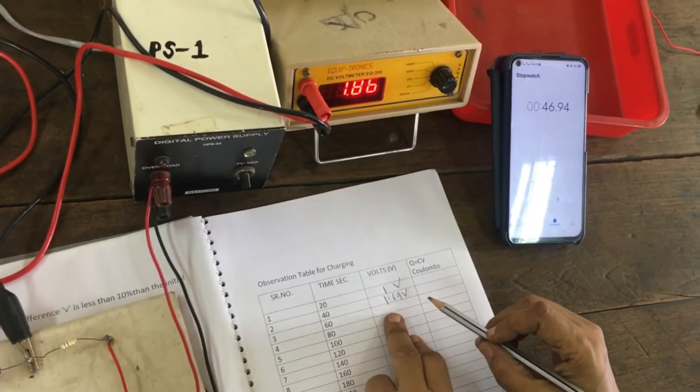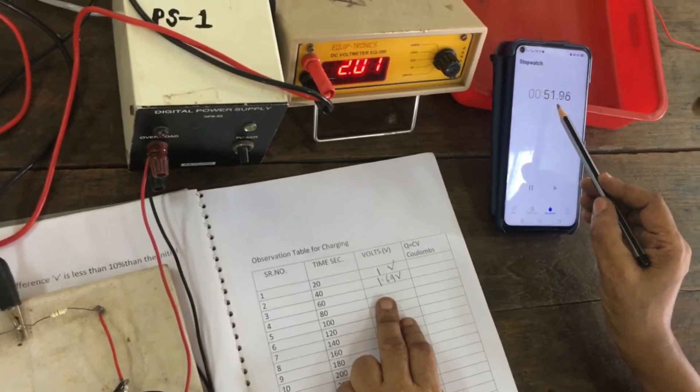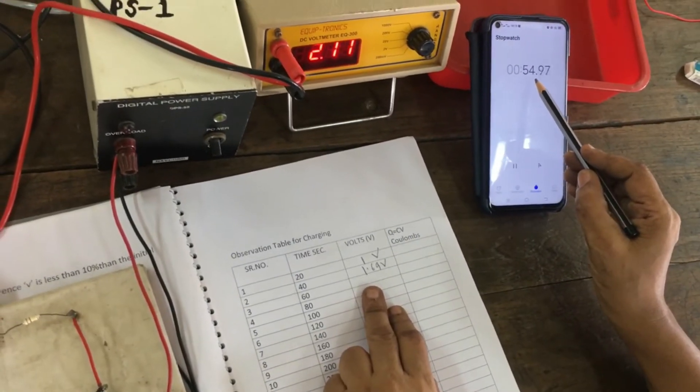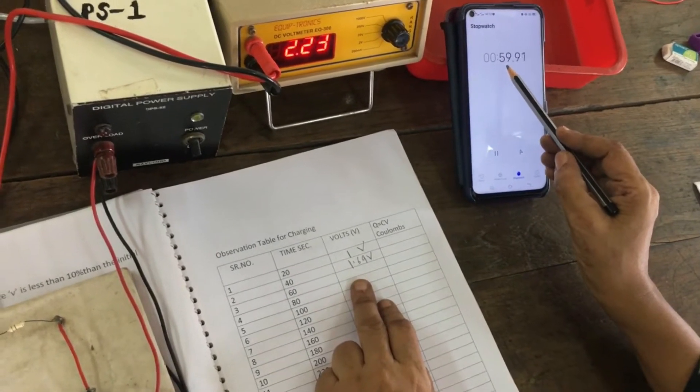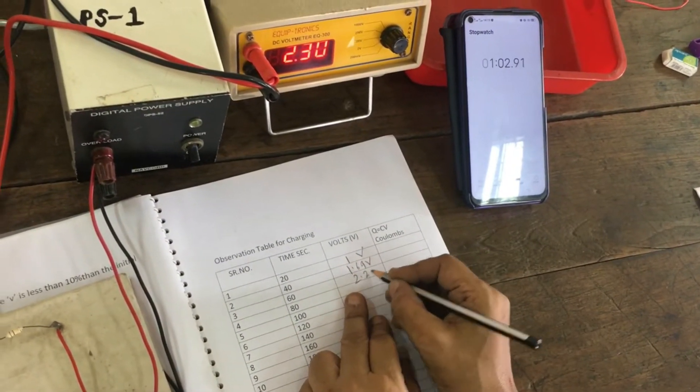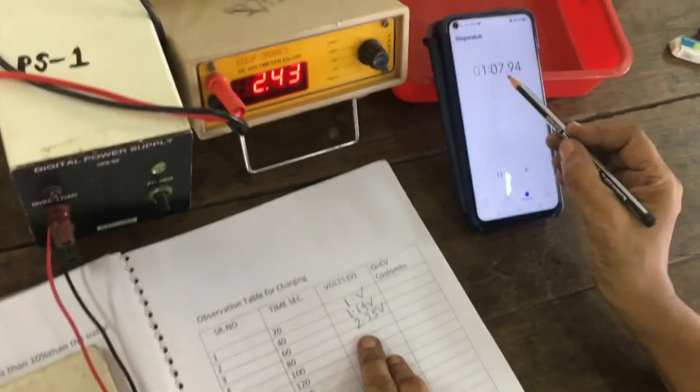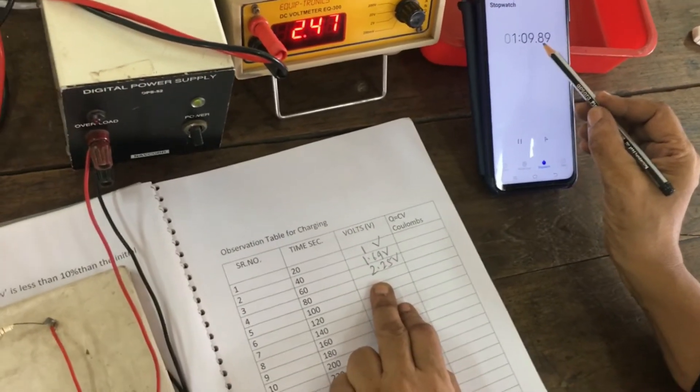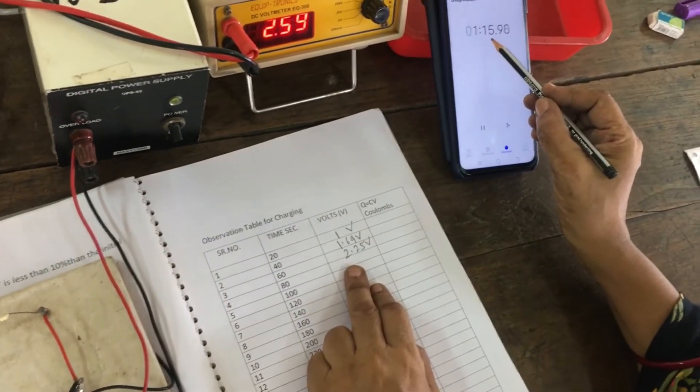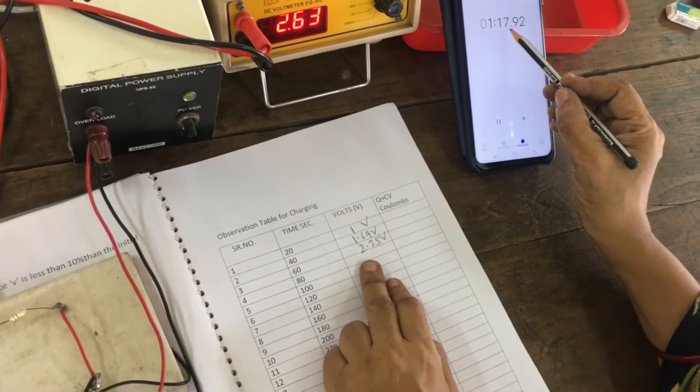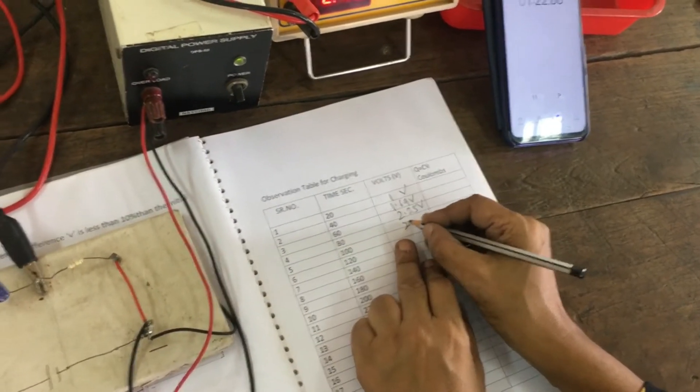Now, next reading is 60 seconds. At 60 seconds: 2.25 volt. Now, next reading is 80 seconds. At 80 seconds: 2.70 volt.